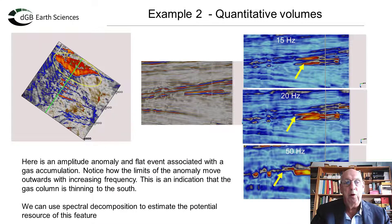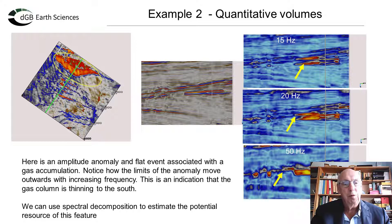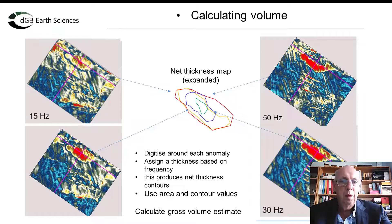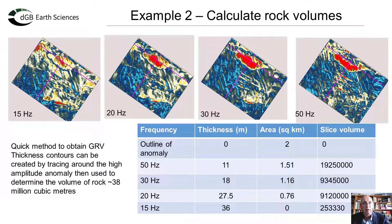This next example is a simple workflow to obtain estimates of gross rock volume or potential resources in a prospect. Here we have a strong amplitude anomaly and a seismic section through the amplitudes; on the right are sections at 15 Hz, 20 Hz and 50 Hz. Because the reservoir is thinning, the southern edge of the amplitude anomaly moves southwards as frequency increases. For each frequency component in map view, it is simply a matter of drawing a polygon around the high amplitude and assuming a thickness based on the tuning thickness to give an area for volume calculations. I've traced around the outlines of the anomalous high amplitudes and the result is a contour map that we can use to generate slice volumes and check how it fits into the prospect inventory.